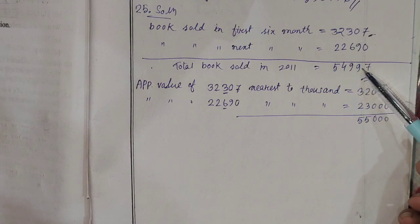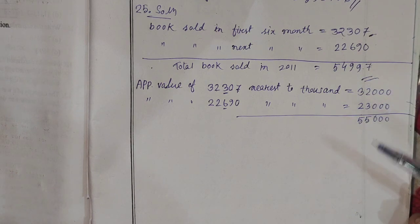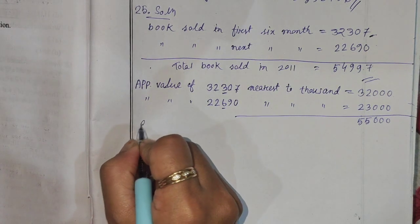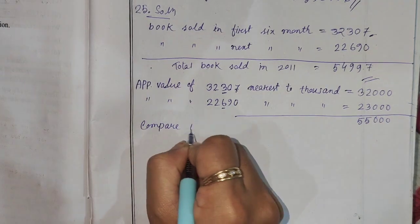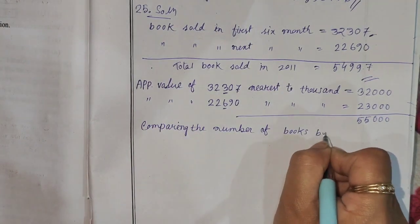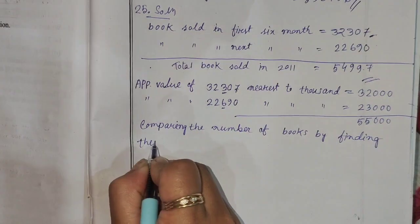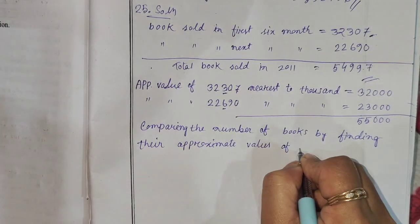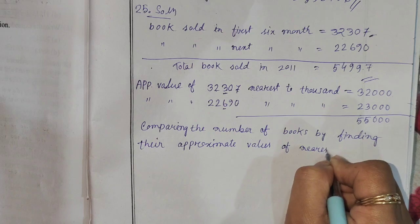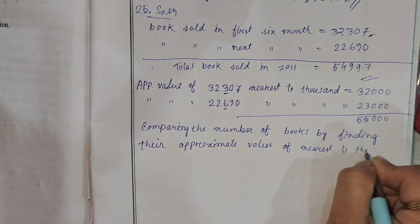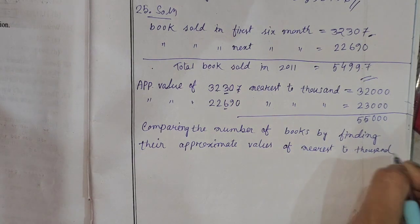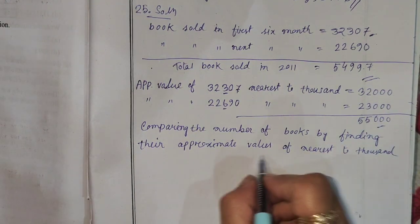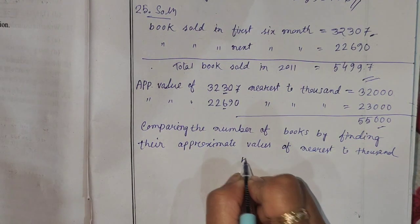So we will compare the actual value and approximate value. We will compare the number of books by finding their approximate value. We will compare the numbers to 5,500.